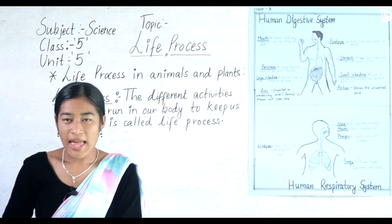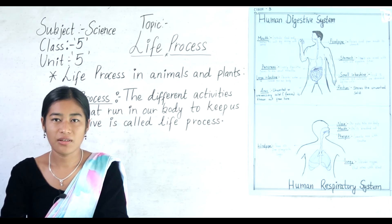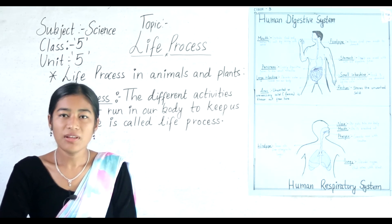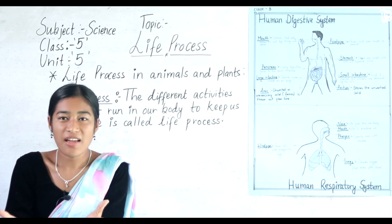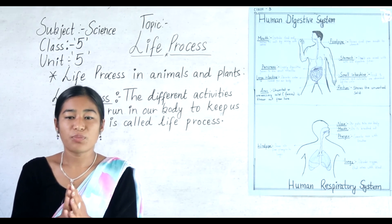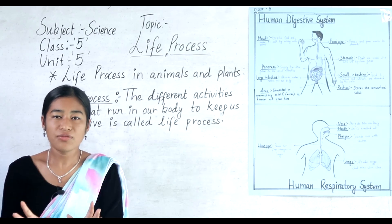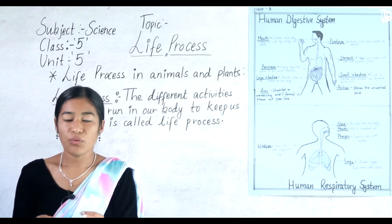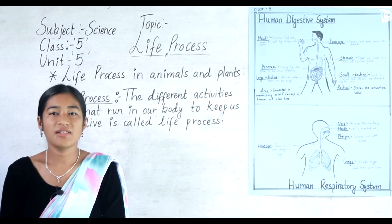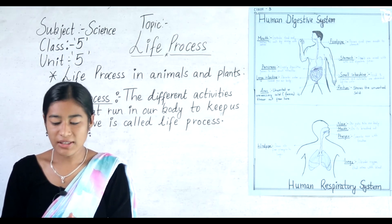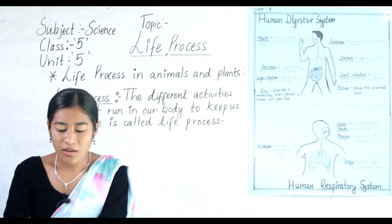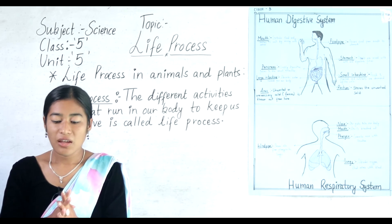First, take out your book and copy and turn to page number 53. We are going to learn the first topic, that is life processes in animals and in plants. Do you know what keeps us alive? Have you ever thought about what keeps you alive? There are different processes and activities which run in our body that keep us alive.